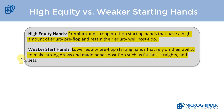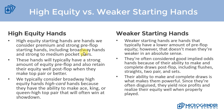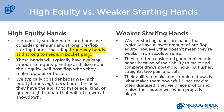Let's take a look at the high equity hand details. Our premium and strong preflop starting hands are typically what we call broadway cards — hands such as ace-jack, ace-queen, king-queen, ace-king, pocket aces, pocket kings, pocket queens, and so forth — going all the way down to medium-strength pocket pairs. These hands have a strong amount of equity preflop and they also retain it well post flop, typically because they'll make top pair or better.